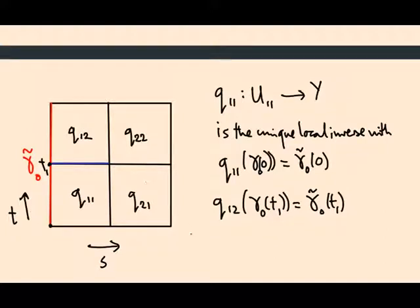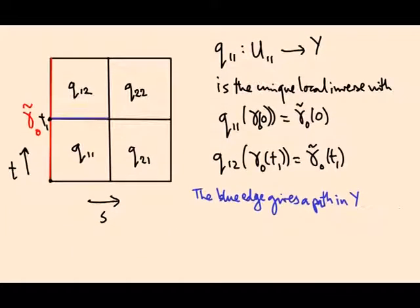Well, this blue edge is a path. So the blue edge gives a path in y. How? Well if I restrict q_11 to h of s, t_1, right, so t_1 is the height of this blue edge, as s varies I get a path. Right, h of s, t_1 in x, and now I'm composing that with q_11, and it gives another path which is q_12 because that blue edge is also on the bottom of this rectangle.